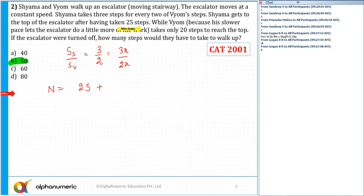What is the time taken by Syama to take 25 steps? That is 25 by 3x. And in the same time, the escalator will also travel a certain distance. Syama has taken 25 steps; certain distance will be covered by the escalator on behalf of Syama.